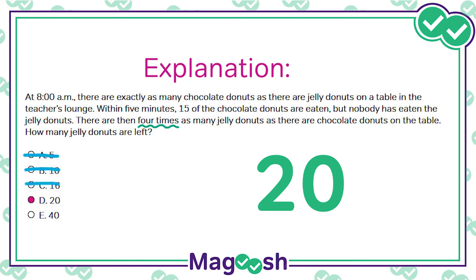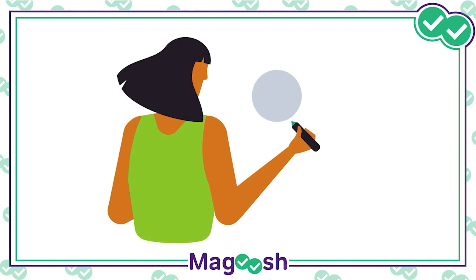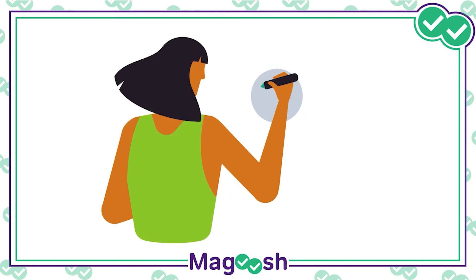Let's try D then, so we'll have more jelly donuts. 20 and 20 match up. As you can see with this example, we're done just like that. Once you're practiced with the process of elimination, you'll find that doing it in your head is even faster.